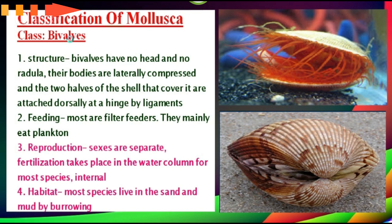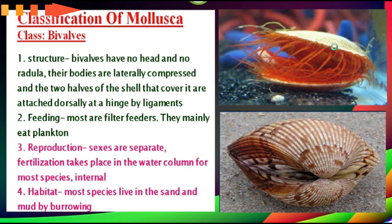The next class is Bivalvia. Bivalves have no head and no radula. Their bodies are laterally compressed and the two halves of the shell that cover them are attached dorsally by hinge ligaments. Their feeding mode is mostly filter feeding, mainly on plankton. Reproduction involves separate sexes, with fertilization taking place in the water column for most species, or internally for others. Most species live in sand and mud by boring. These are the representative members of this class.